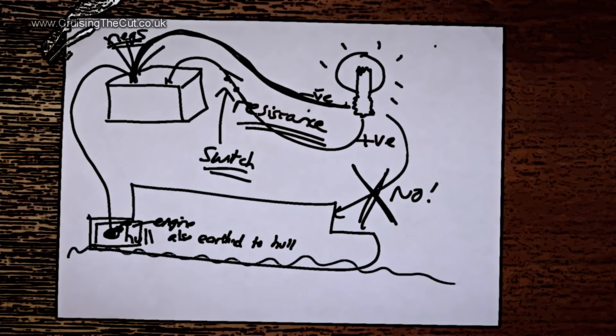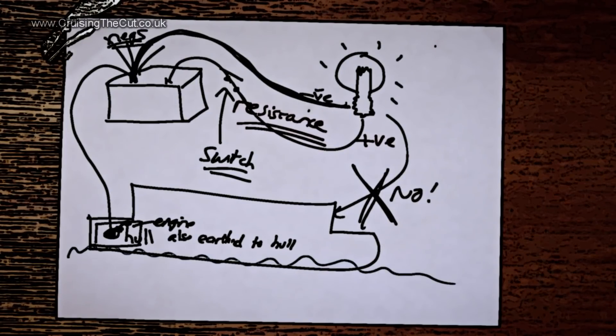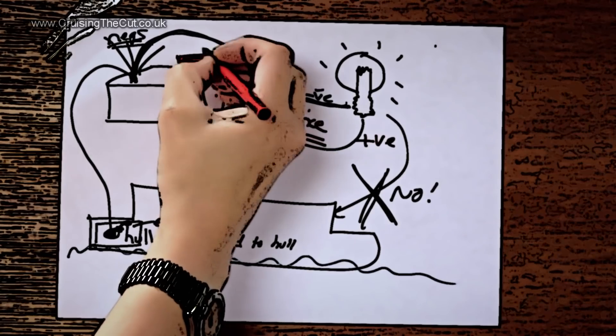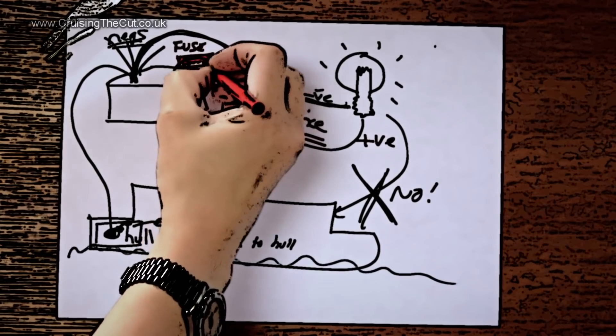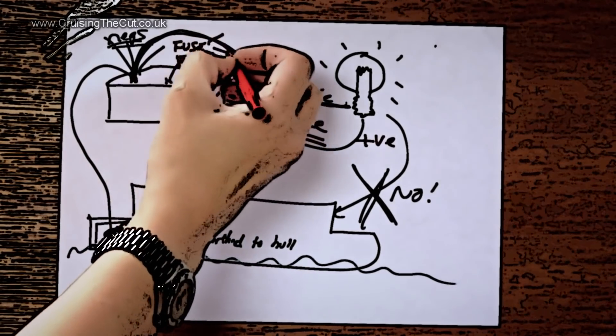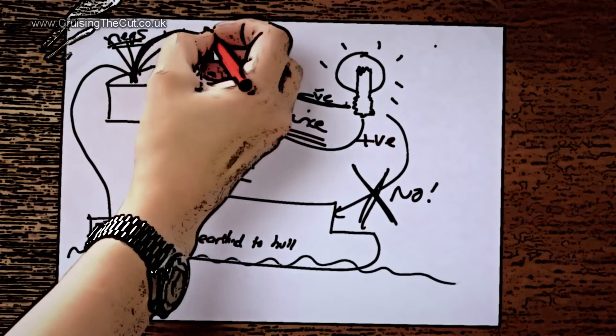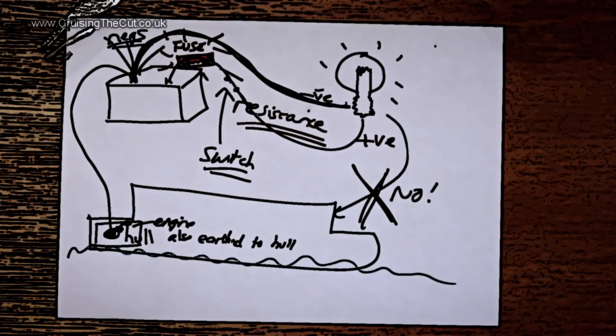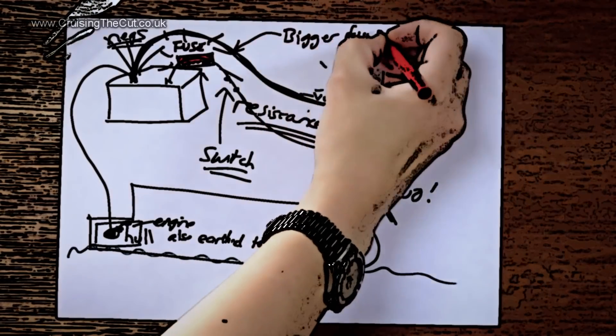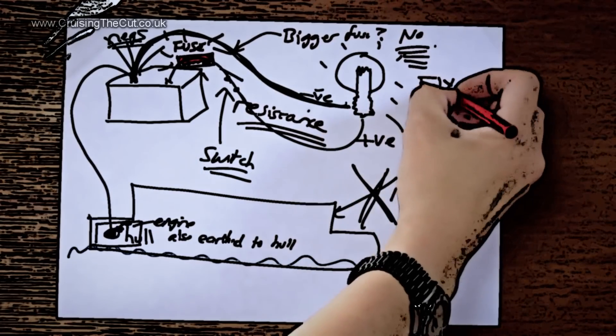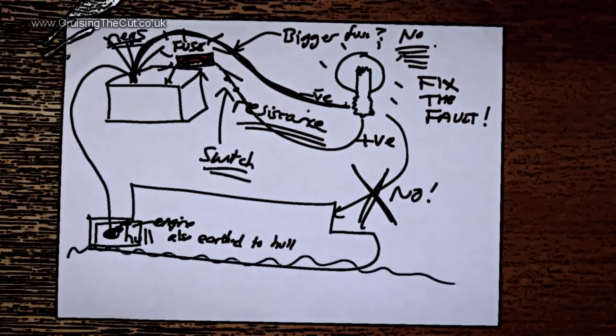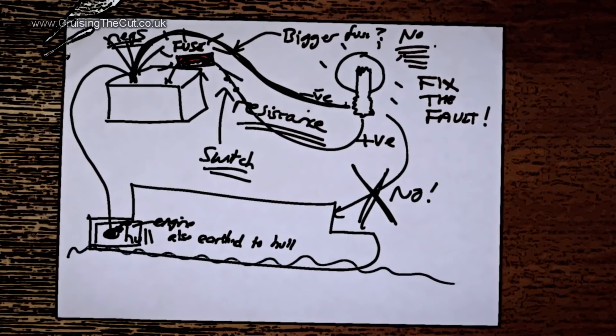In each positive line emerging from the battery there will, or that jolly well should be, a fuse. Fuses are crucial because in the event of a bit of wire, say chafing somewhere in the boat and causing a short circuit, it's the fuse that will blow up and disconnect the power rather than a fire breaking out in the chafed wire and potentially setting your boat on fire. If a fuse blows and you replace it and it blows again, that pretty much almost certainly means something has a fault on the circuit and that needs to be diagnosed and fixed. Don't just stick a bigger fuse in to make the circuit work, or again you could end up with a fire on board.